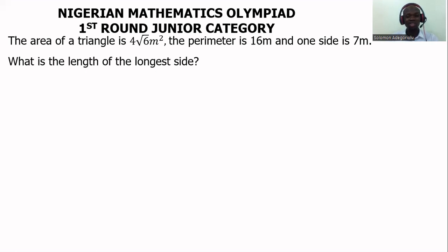But before we go ahead, please don't forget to subscribe to this channel, like, and share. Thank you. Going back to the question we have on the screen: the area of a triangle is 4√6 meters squared, the perimeter is 16 meters, and one side is 7 meters. What is the length of the longest side?